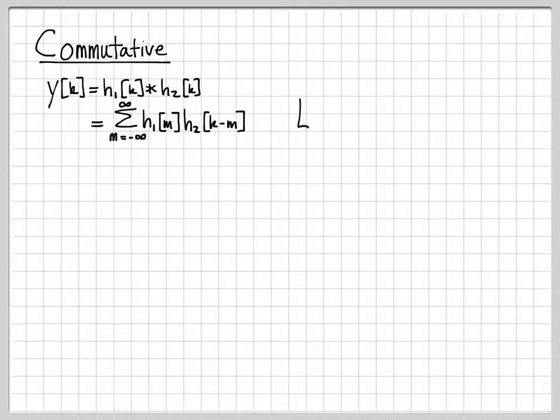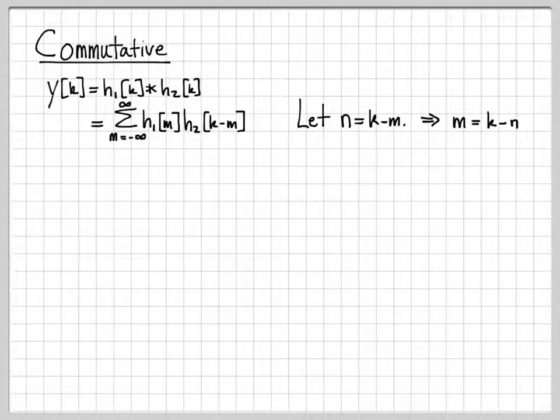That's the summation right here. Now let's do a change of variable. Let's let this new variable n equal k minus m. So when n is equal to k minus m, if you rearrange this equation, you have that m is equal to k minus n.